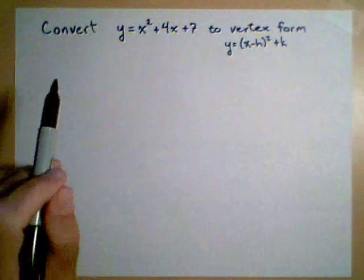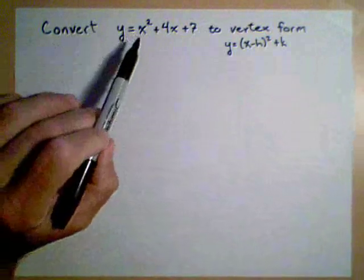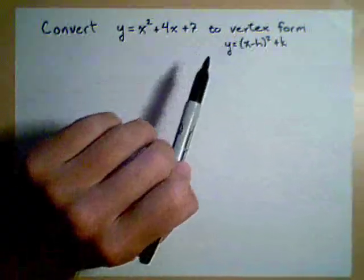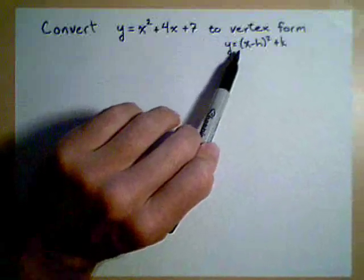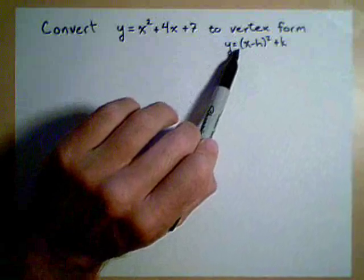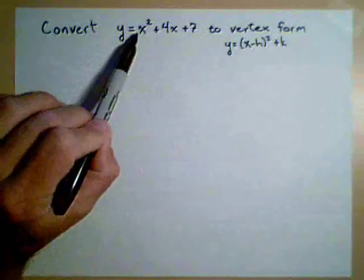In this video, we're going to look at converting a quadratic from general form to what is known as vertex or standard form. This form here, y equals x minus h to the square plus k. Now there's no a in here because a is just 1 on this one.